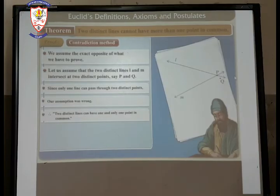Now, let come to the theorem. Two distinct lines cannot have more than one point in common. We are starting the proof. The first is contradiction method. It means that we are assuming the exact opposite of what we have to prove. So what we are going to assume that the two distinct lines L and M intersect at two distinct points say P and Q. Since we know that only one line can pass through two distinct points, our assumption was wrong. So we can say that two distinct lines can have one and only one common point.